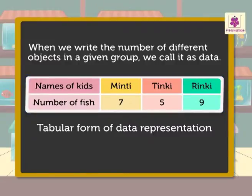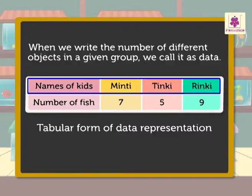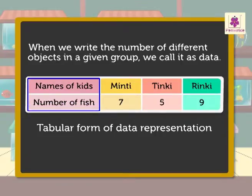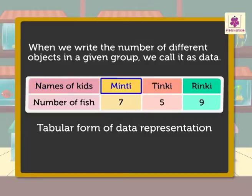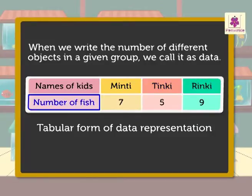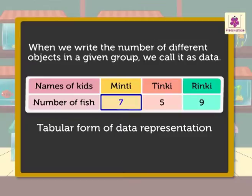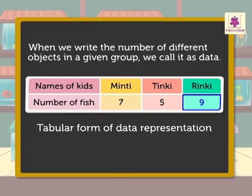A table is made up of horizontal rows and vertical columns. We write the names of kids in the first row who bought the aquariums — that is, Minty, Tinky and Rinky. We write the number of fish in the second row: 7 in Minty's aquarium, 5 in Tinky's aquarium and 9 in Rinky's aquarium.